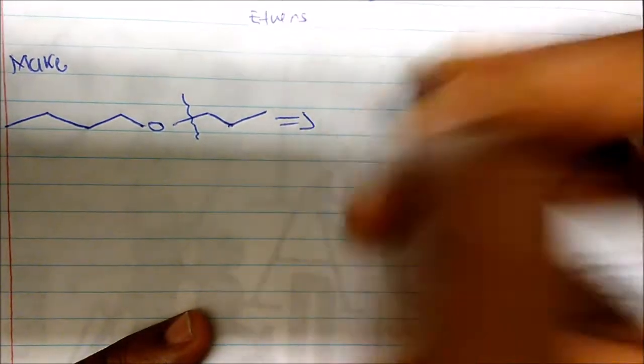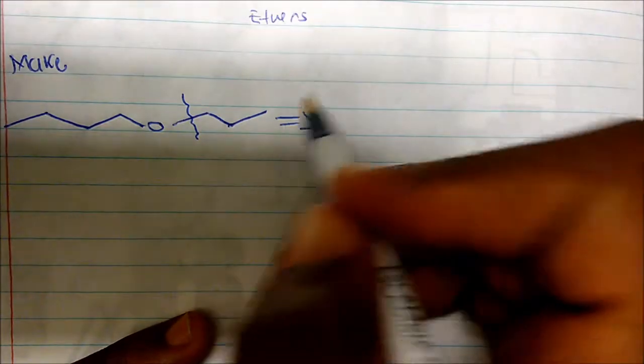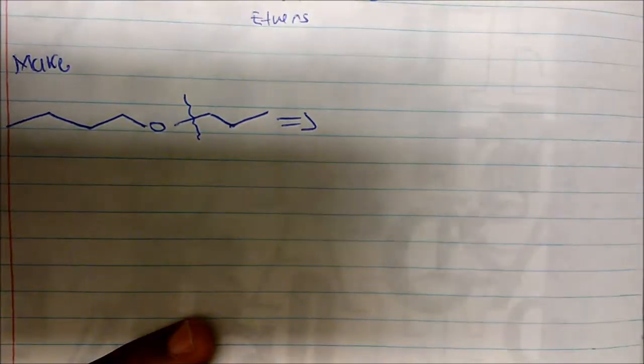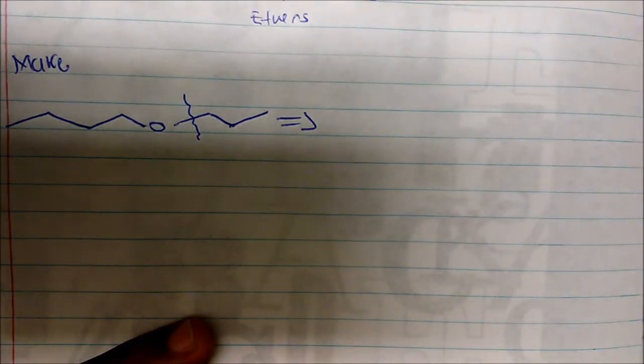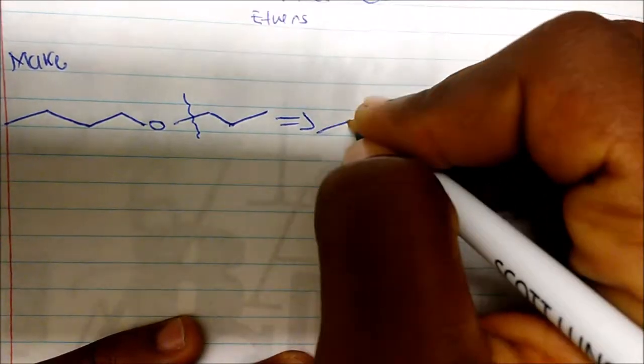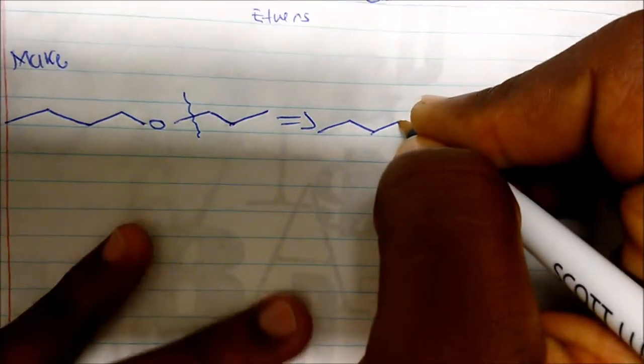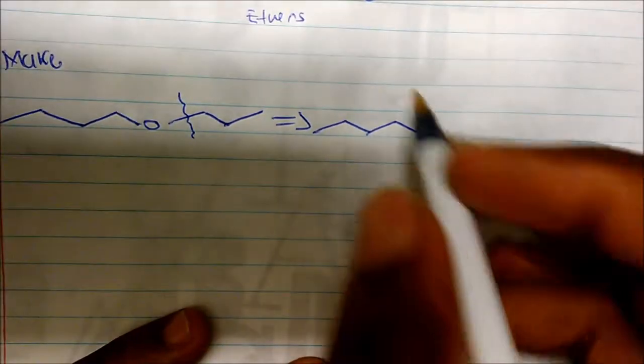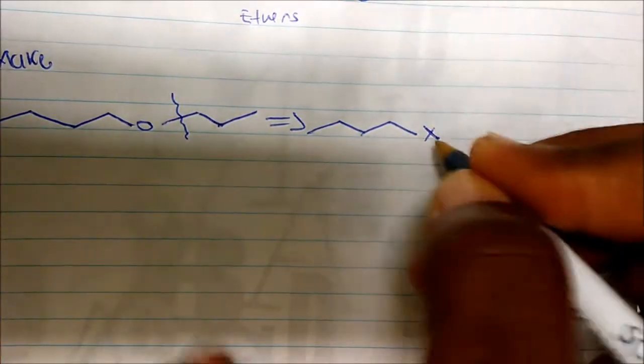My retrosynthesis - this double arrow here just means that I'm going back to my starting materials. If I break this bond here, I could see that I could create this from some sort of X, some sort of this molecule X where X is an alkyl halide plus an alcohol.